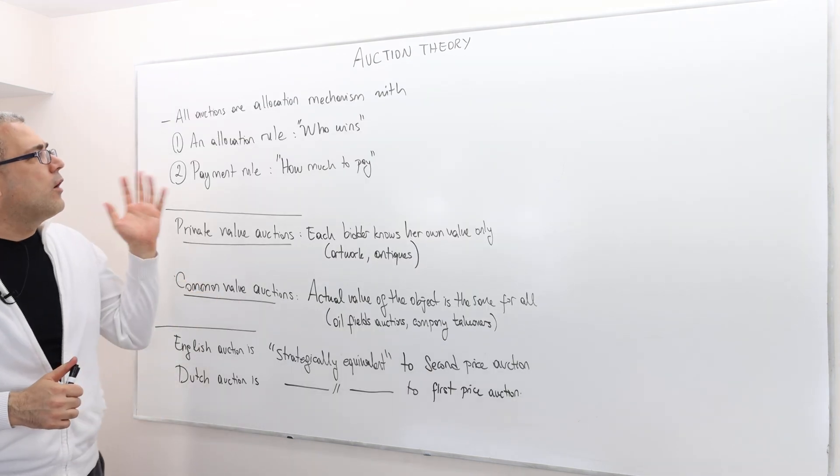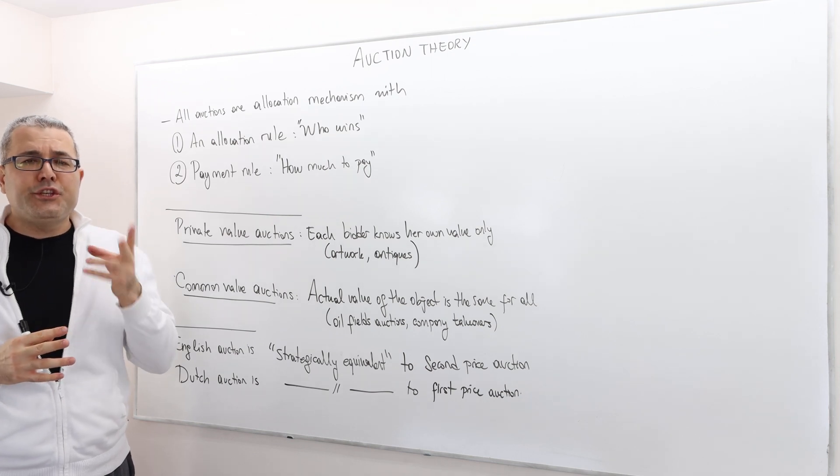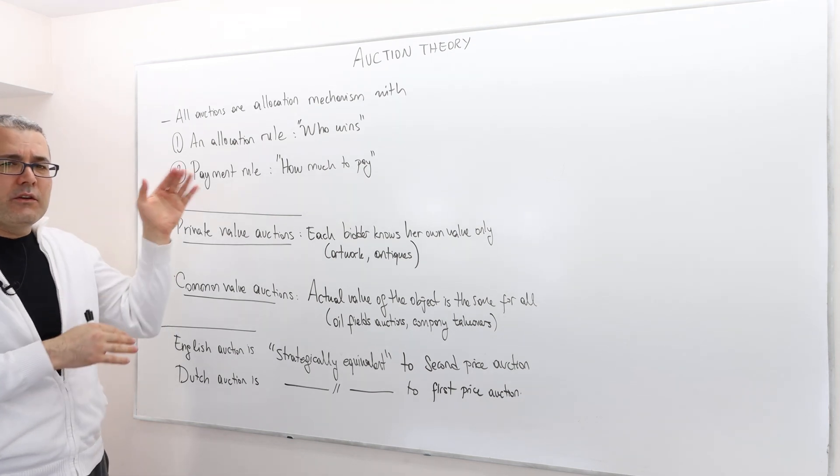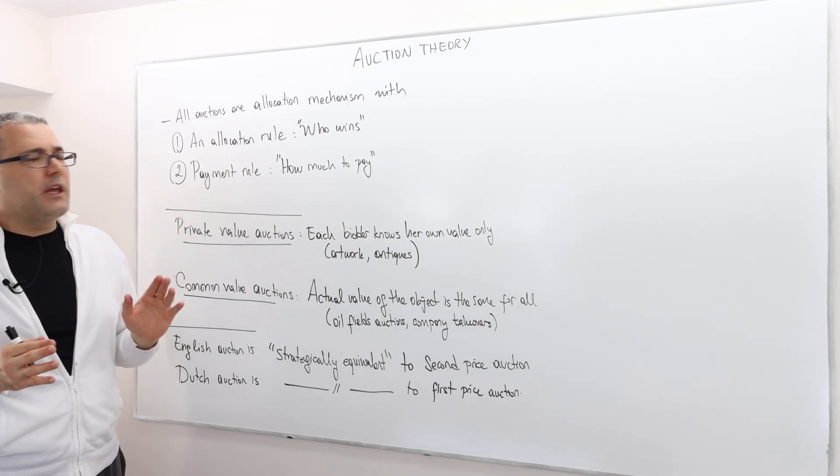We can think of auctions as allocation mechanisms with two main ingredients, an allocation rule and a payment rule. So what is an allocation rule?